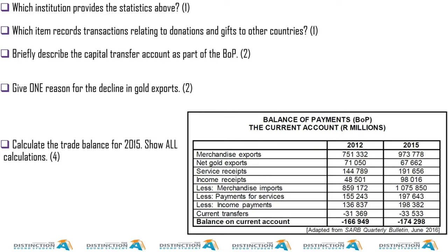Normally, we take merchandise exports and add net gold exports, add service receipts, add income receipts, then subtract merchandise imports, subtract payments for services, subtract income payments, and subtract current transfers — this last one is mostly a net figure, so in this case it's negative, so we subtract it. This is how we arrive at the current account balance.